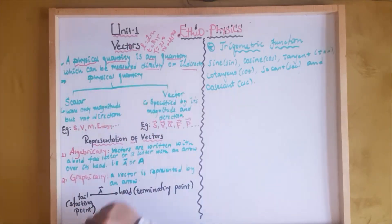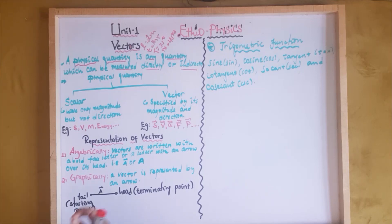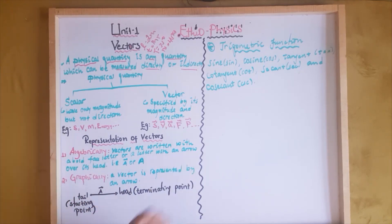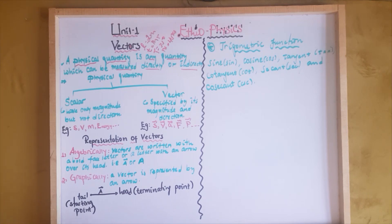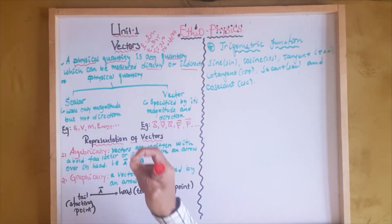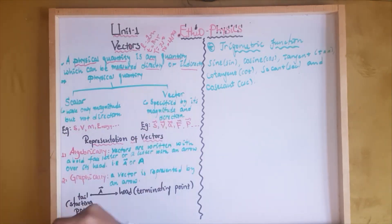Indirectly measured quantities are derived quantities. Derived quantities are quantities which are measured indirectly. Or you can say, we get derived quantities by combining two or more than two fundamental quantities together.